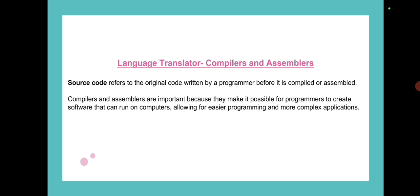Source code refers to the original code written by a programmer before it is compiled or assembled. Source code is the code that humans write in high level language. Object code is basically the code created by the compiler. Object code is in binary form and source code is in high level human readable form. Compilers and assemblers are important because they make it possible for programmers to create software that can run on computers, allowing for easier programming and complex applications.